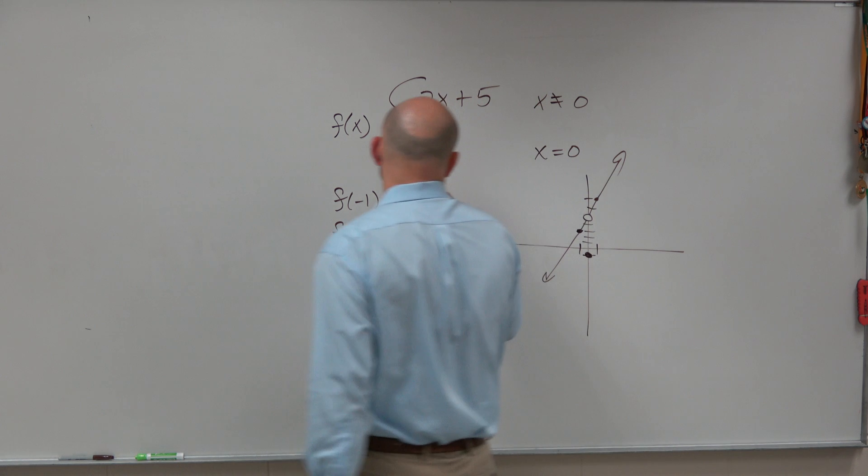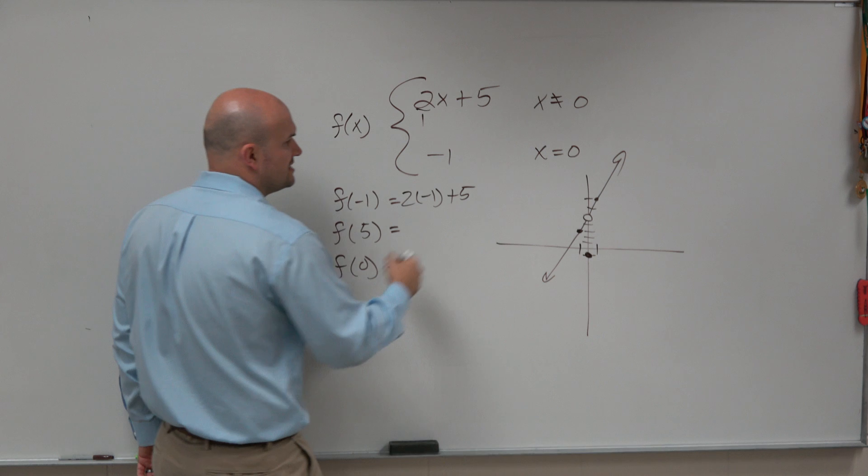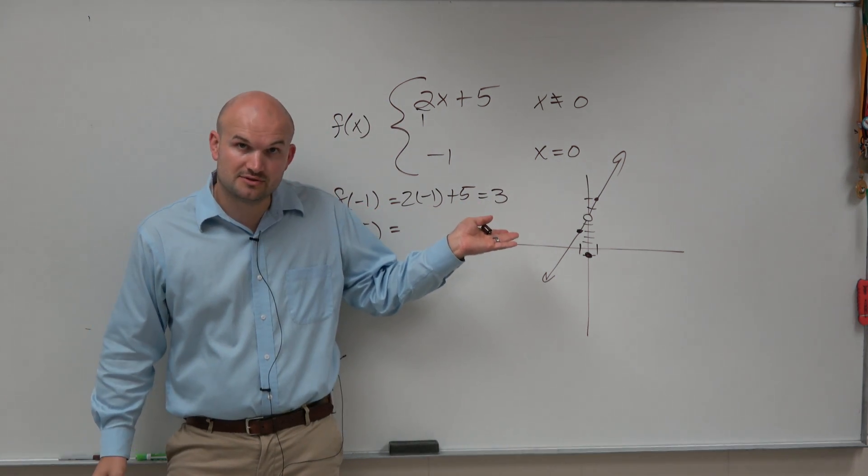What is that value? All you need to do is plug in negative 1 into the function. You could probably see this on the graph, and what you'd see is that answer is 3. So f of negative 1 is equal to 3.